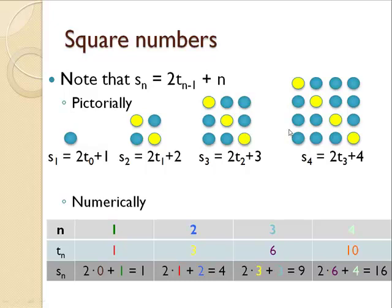And by noting numerically in the table the index 1 through 4, the triangular numbers 1, 3, 6, and 10, we can show numerically that we get those square numbers 1, 4, 9, and 16.